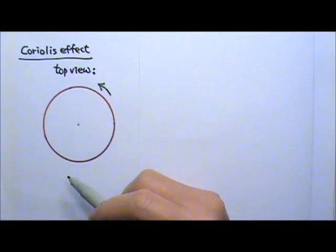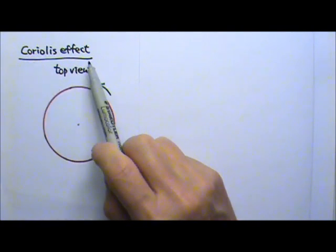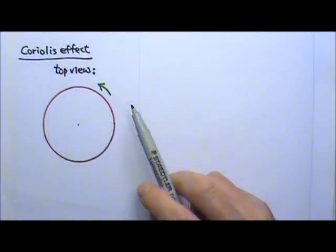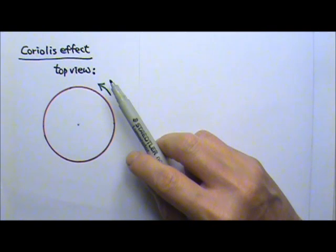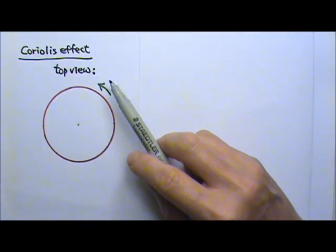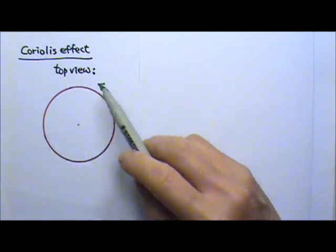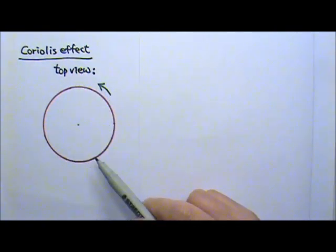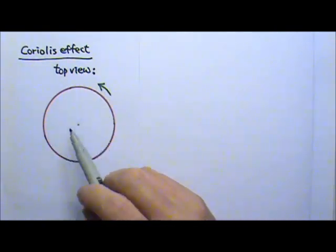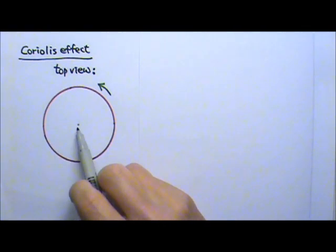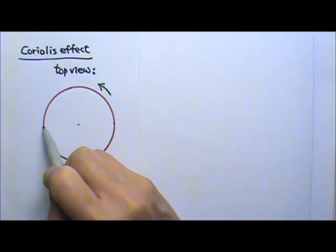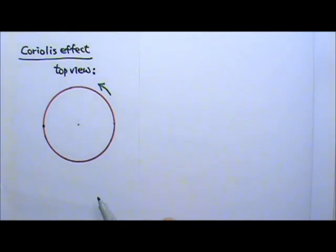Another interesting example of non-inertial reference frame is the Coriolis effect. The Coriolis effect is a deflection of a moving object when observed in a rotating reference frame. For example, if I sit on the edge of a merry-go-round, I throw a ball toward the center the moment I pass this location.